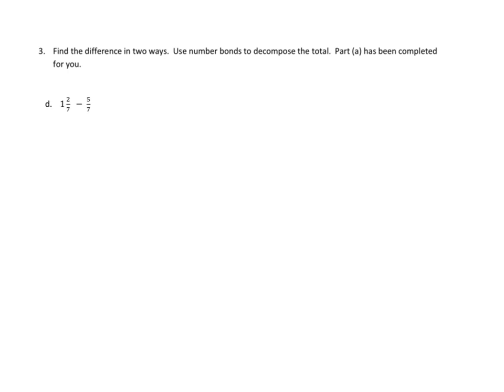Let's take a look at one more problem. Let's take a look at problem number 3 and read that together. Find the difference in two ways. Use number bonds to decompose the total. Part A has been completed for you, and I've obscured it here. So we're just going to work on number 3, part D. And here we've got a subtraction problem: 1 and 2/7 minus 5/7.